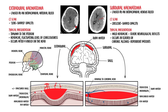Importantly, the CT scan finding in someone with an extra-dural hematoma is a lens-shaped opacity — like a lemon — whereas in a subdural hematoma, it's a crescent shape, like a banana. So: lemon versus banana.